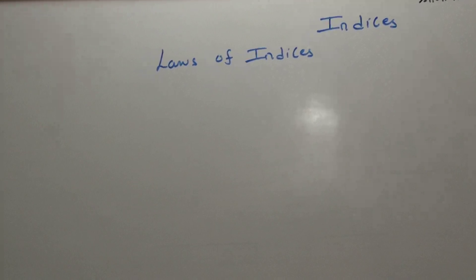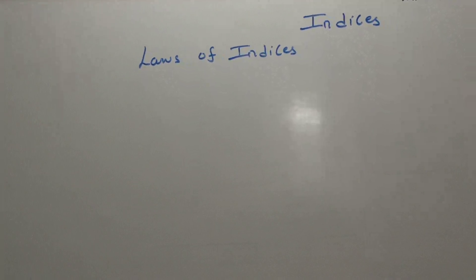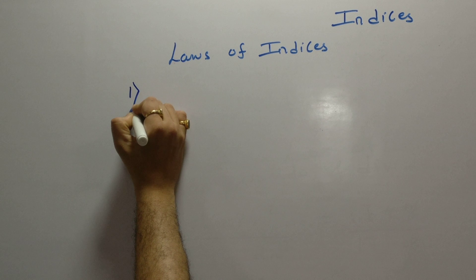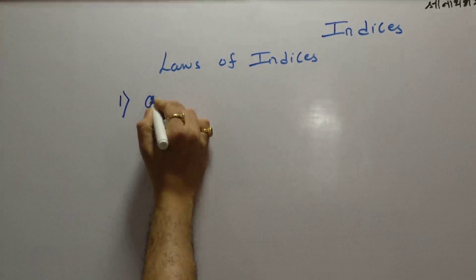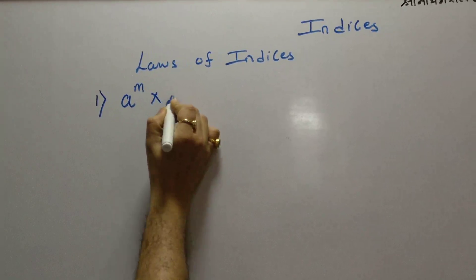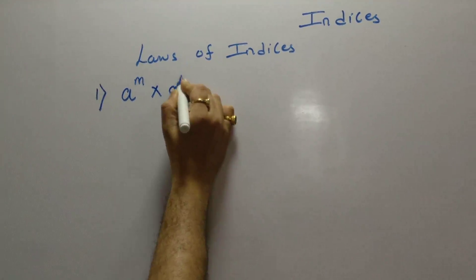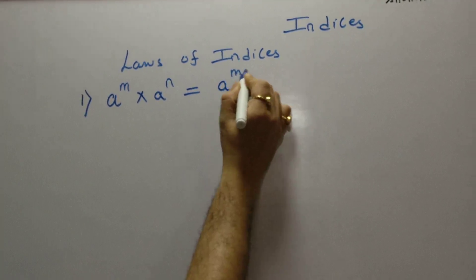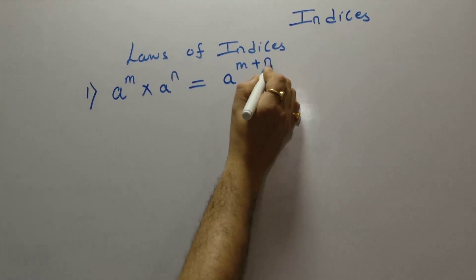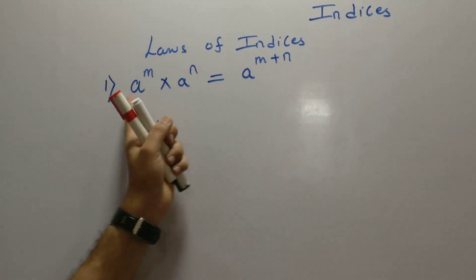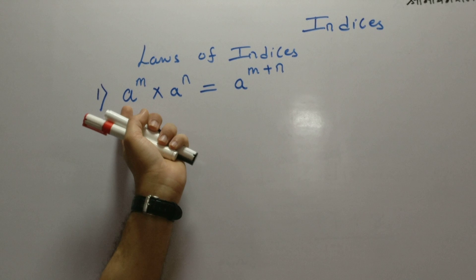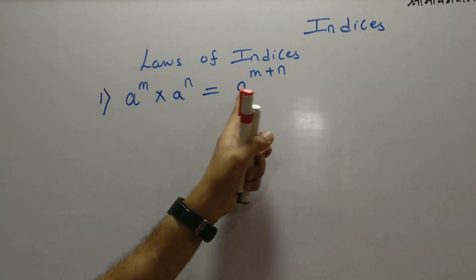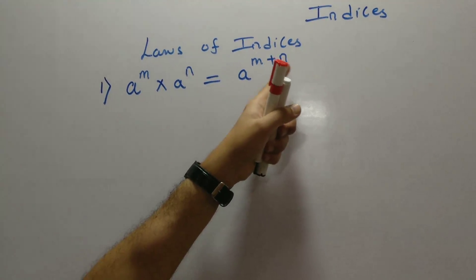To start off with, the very first law of Indices says: A raised to M into A raised to N, answer is A raised to M plus N.